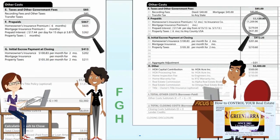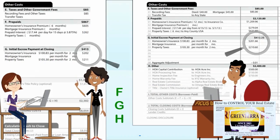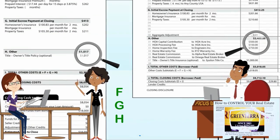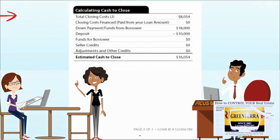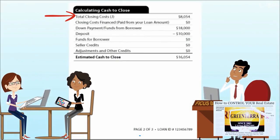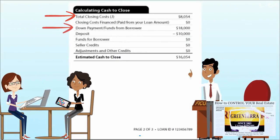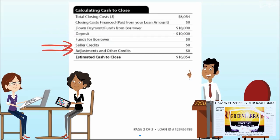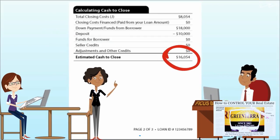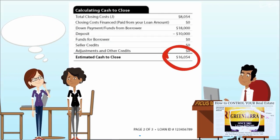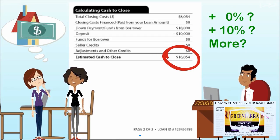Prepaids (F), initial escrow (G), and other costs such as owner's title (H) may vary from the loan estimate without tolerance limits. These estimates of closing costs, plus loan details, down payment, deposits, credits, and adjustments, are used to calculate your estimated cash requirements at closing. Consider possible changes in tolerances when evaluating a loan decision.